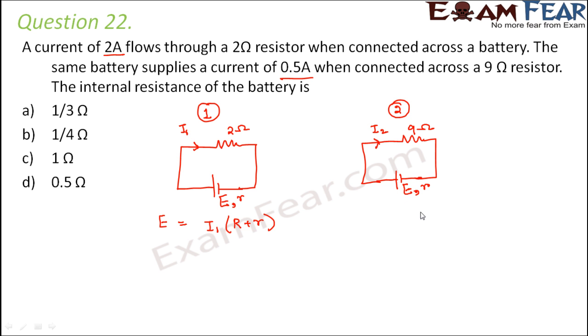Now in this case also the expression would remain the same: E is equal to I2 into capital R plus small r. Now let us put the values. So E in this case will be equal to I1 is 2 Amperes, capital R is 2 Ohms plus small r. In this case E will be equal to I2 is given as 0.5 Amperes, capital R is 9 Ohms and this will be small r.